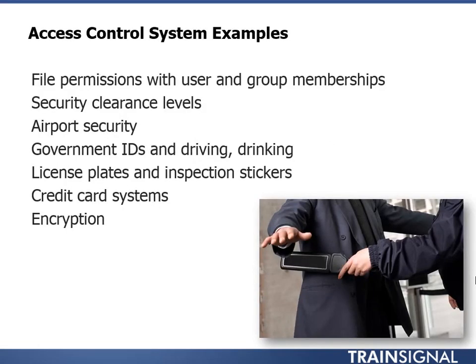Here are some other examples of access control systems. Security clearance levels — unclassified, classified, secret, and top secret — are a classic example. In the government, you're assigned a clearance level depending on how trustworthy you are. If you're cleared for secret but not top secret, you can read secret documents but not top secret ones. The system of vetting people, making sure they're not prone to giving away secrets, and then assigning them an access clearance level that defines which documents they can access — that's all an access control system.